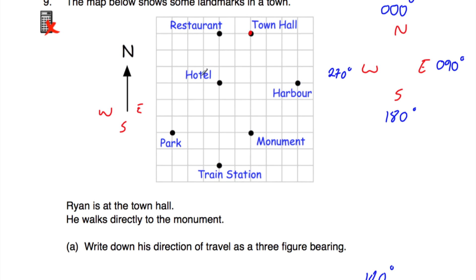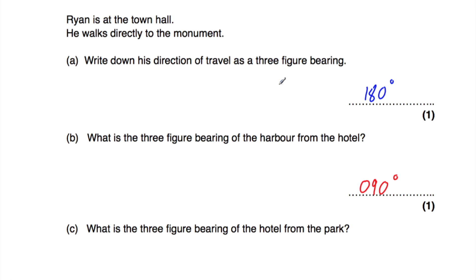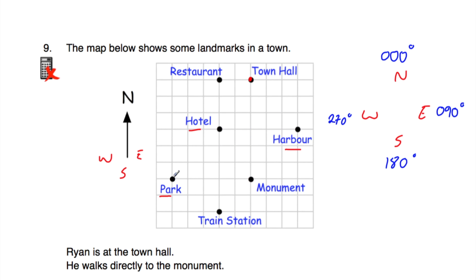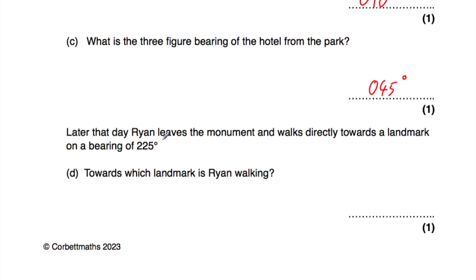Part B says what is the three-figure bearing of the harbor from the hotel? From the hotel we want to travel to the harbor — that's going east. As a bearing, east is 090 degrees, because it's a 90 degree angle clockwise from north to go east, so the answer is 090 degrees. Part C says what is the three-figure bearing of the hotel from the park? From the park we want to go to the hotel — going north east, exactly in the middle of north and east. North is 000 and east is 090, so north east is 045 degrees.